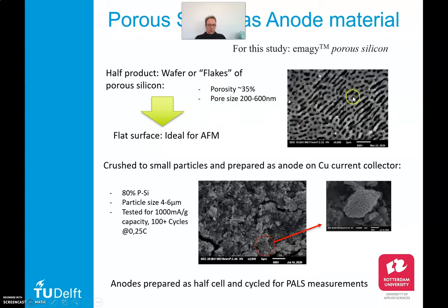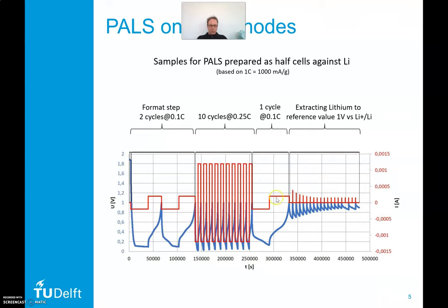When you crush these wafers or flakes you can prepare an anode material combined with carbon black and binder, and we made anodes of about 80% porous silicon. For our positron measurements we made half cells against lithium and had a standard procedure for charging our samples. First we start with two cycles of formatting, then 10 cycles of charging, one cycle at 0.1C again, and at the end we try to extract all the lithium by bringing the sample to 1 volt against lithium.